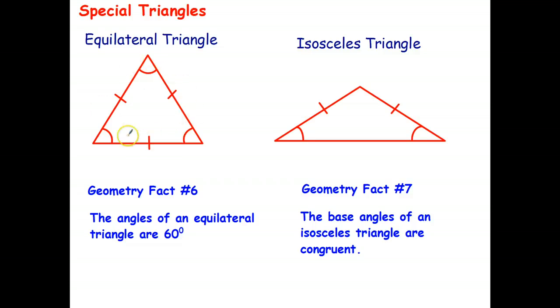So looking at this diagram on the left, this is an equilateral triangle. That means all sides are equal to each other, and therefore all angles are equal. So if these three angles add to 180 degrees, they must be 60 degrees each.